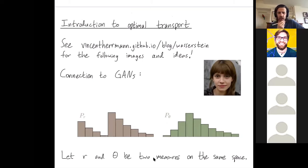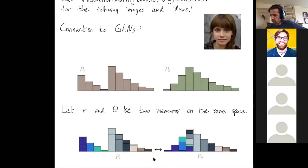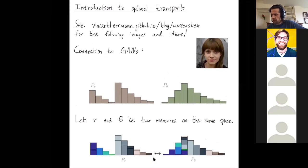So pretend that R and theta are two measures. For simplicity, we'll assume that they're measures on the same space. So this left-hand point is the same as this left-hand point, and this right-hand point is the same as this right-hand point. And in these drawings, R and theta are indeed just measures on the real line. So the horizontal axis here is the real line, and the height of each bar tells you how much mass you have at each point on the real line. So theta is unimodal, whereas R is bimodal. It has two bumps.